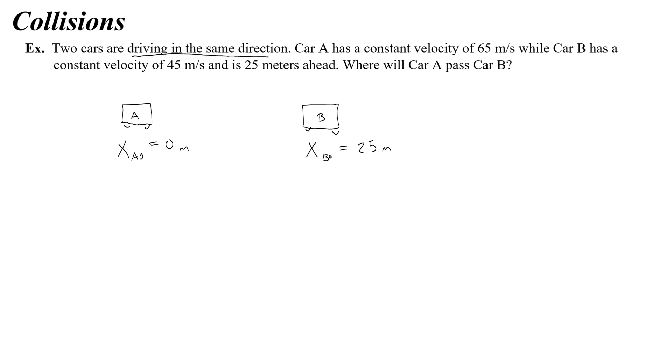They're driving in the same direction. That's important. So car A has a velocity we'll call vA, average velocity here. And that average velocity is 65 meters per second. I'm going to write a positive to remind myself that it's moving to the right.